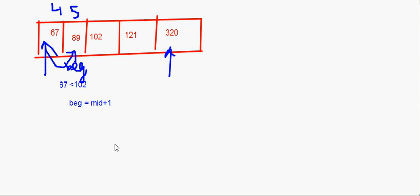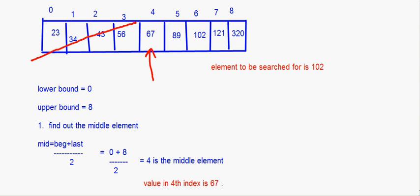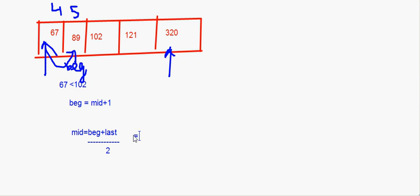Now once we do this, the next step is again to find mid = (beginning + last) / 2. Beginning is now 5 and last is still 8, so it is (5 + 8) / 2 = 13 / 2 = 6.5, which we take as 6. So 6 becomes the new middle element.